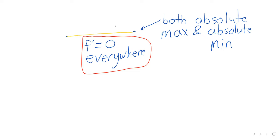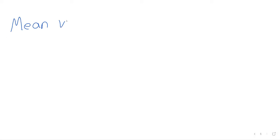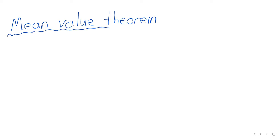We're going to use Rolle's Theorem once and then never refer to it again. And that once is right now, when we introduce something we care about much more than Rolle's Theorem: the Mean Value Theorem. Mean meaning average here, not nasty. Does anybody have any questions so far?